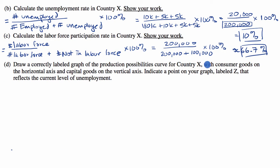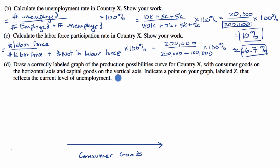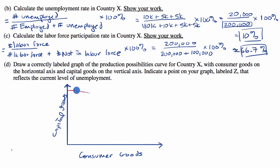They tell us consumer goods on the horizontal axis, so my horizontal axis is going to have consumer goods. And then capital goods on the vertical axis. It's a production possibilities curve, and they typically look something like this — a bowed-out curve.